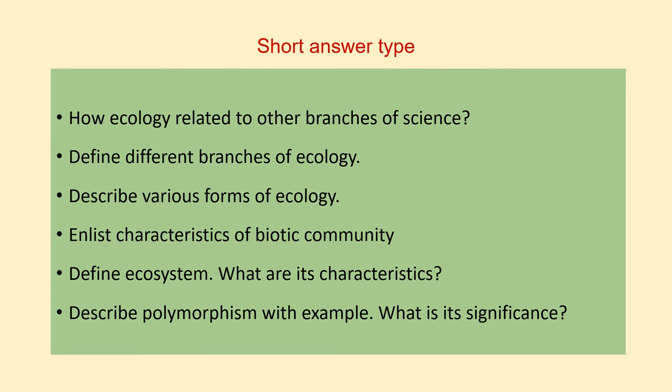In this section, we are taking some important short answer type questions. First question is: how is ecology related to other branches of science? Next is: define different branches of ecology. Third is: describe various forms of ecology. Fourth: list characteristics of biotic community. Fifth: define ecosystem and what are its characteristics? And the last question is: describe polymorphism with example. What is its significance?